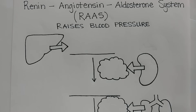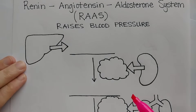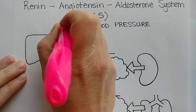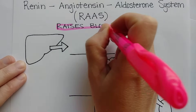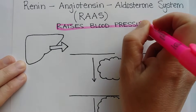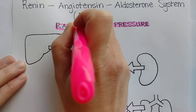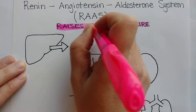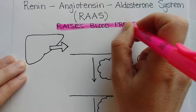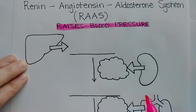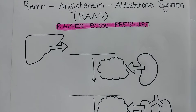Welcome to this video on the renin angiotensin aldosterone system. The key idea from this video is that the renin angiotensin aldosterone system raises blood pressure. If there's one thing that you take away from this video, that should be the takeaway idea.